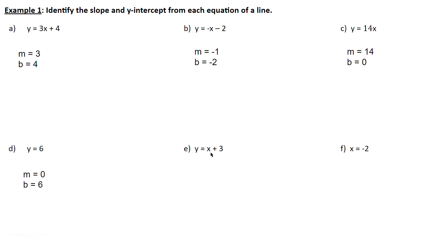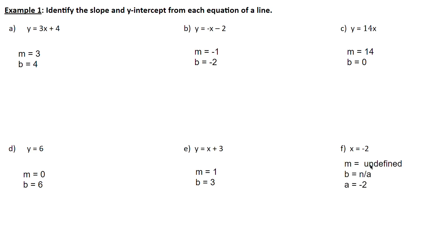Over here, y equals x plus 3, so we have a slope of 1 and a y-intercept of 3. For this last one, there is no y-intercept, so we define it by its x-intercept. The slope is undefined, the y-intercept does not exist, and we define it by the x-intercept, which is a equals negative 2.